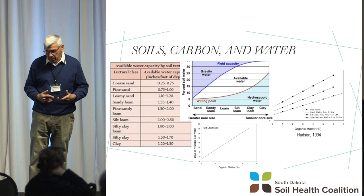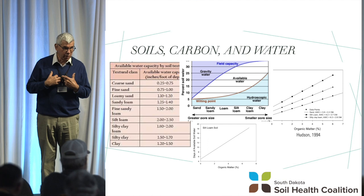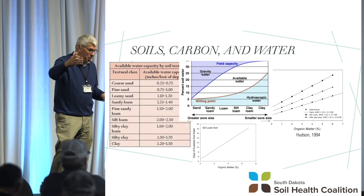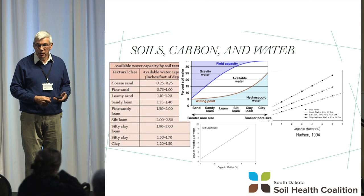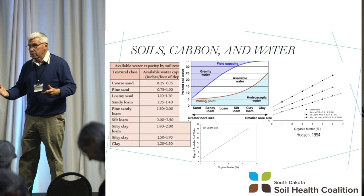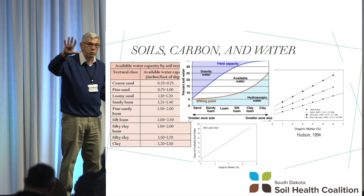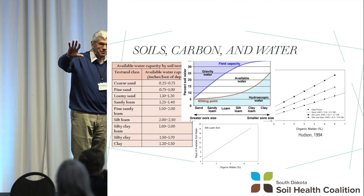To put that in perspective: take a corn crop in central Iowa, middle of August, using about three-tenths to four-tenths of an inch of water a day. Assuming a five-foot profile, at 2% organic matter you have about eight days of available water. At 4% organic matter, you have 13 days of available water — five more days in which that crop isn't stressed. What does that mean? Profit.